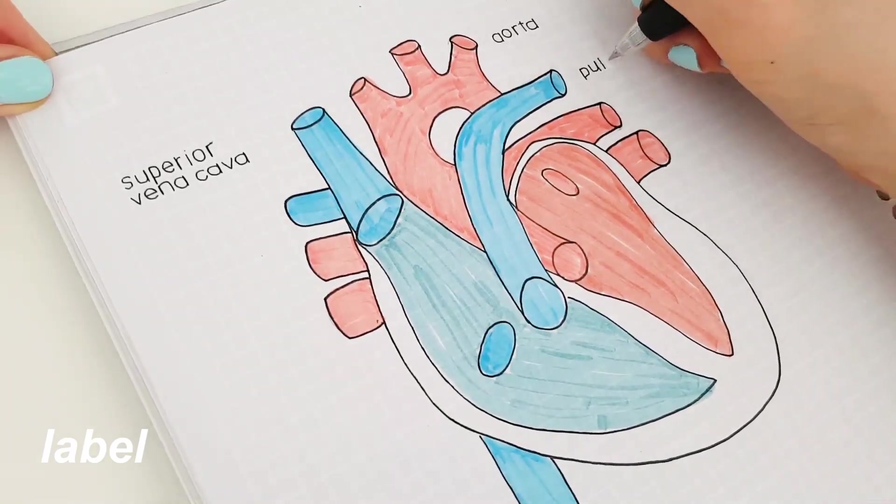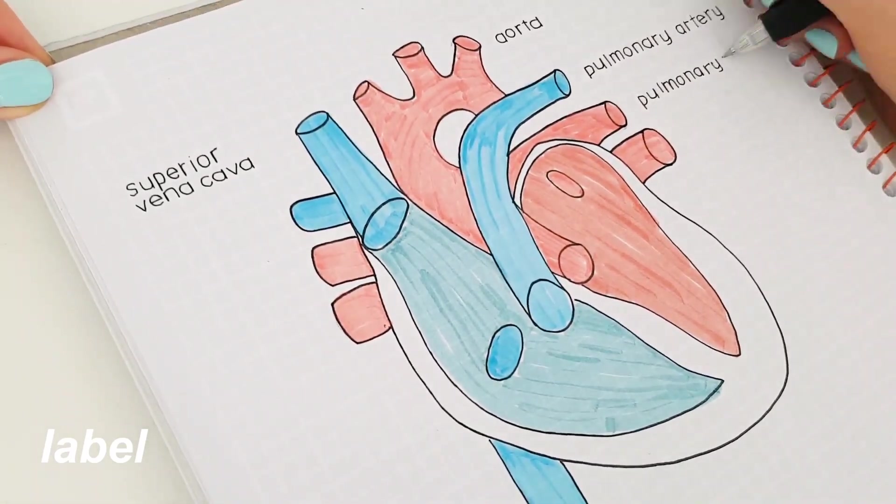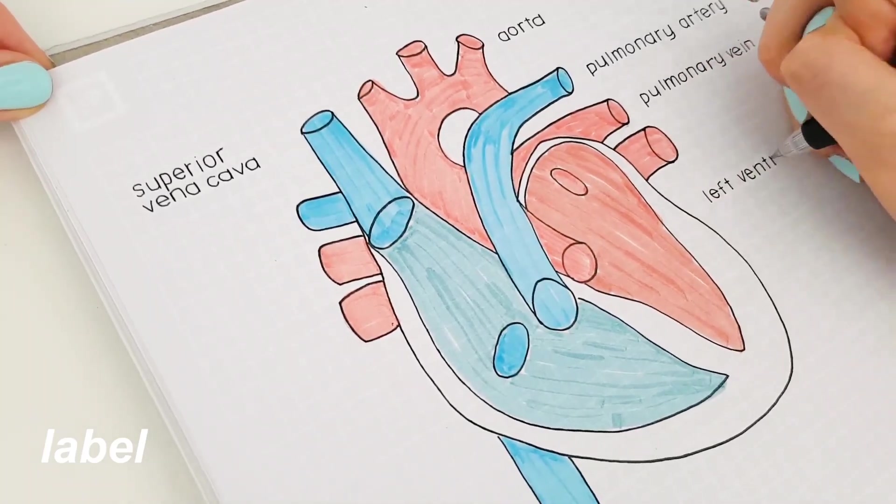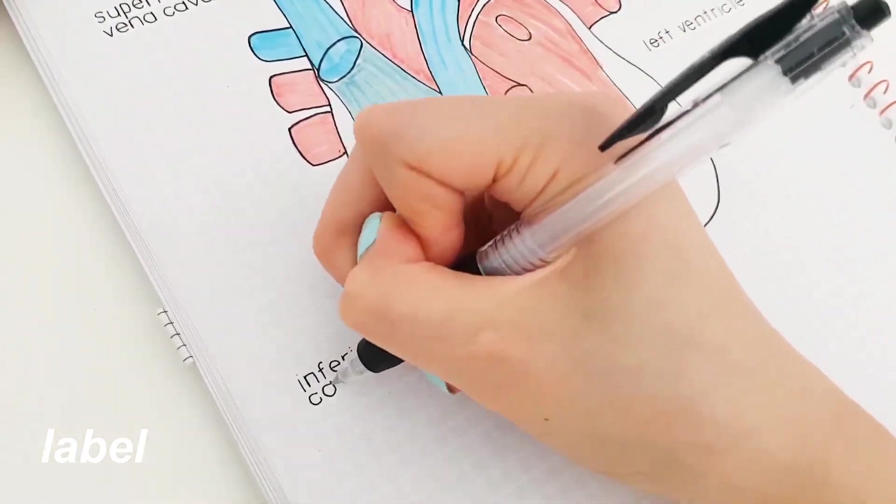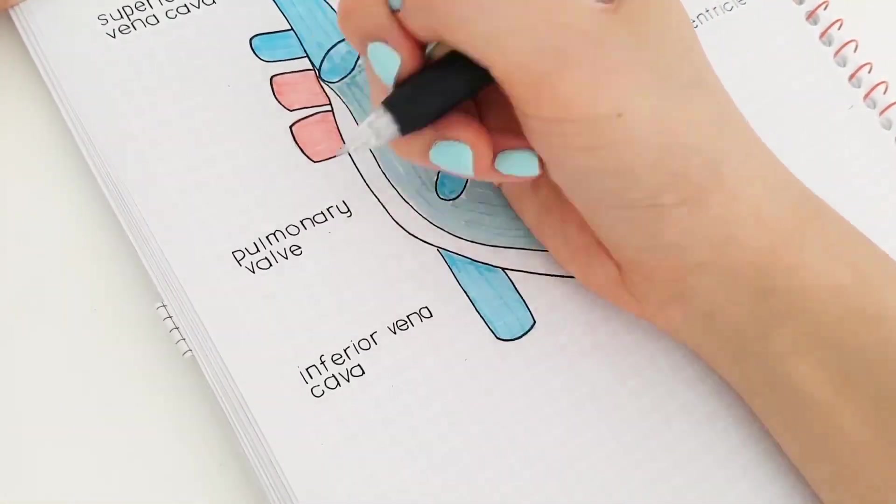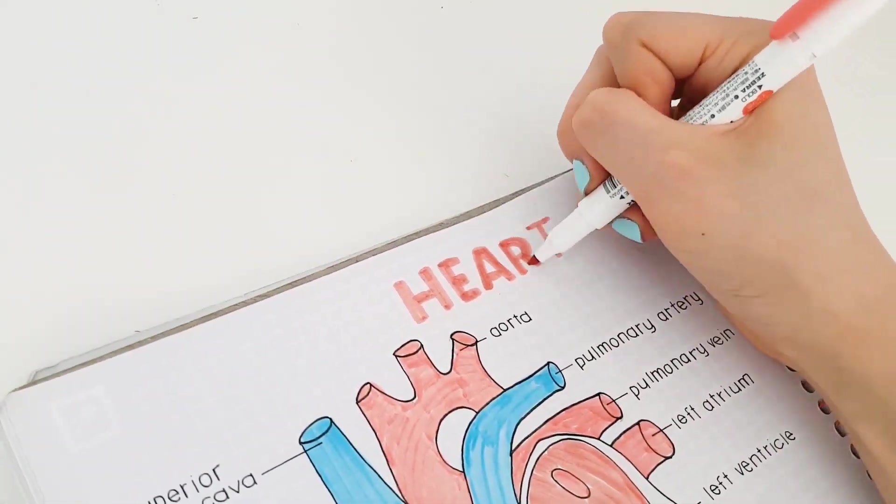I used a ruler to make straight lines when I labeled it. However, you can really just write really fast and you can get a straight line. And then I just drew a nice title here. I did like a drippy one.